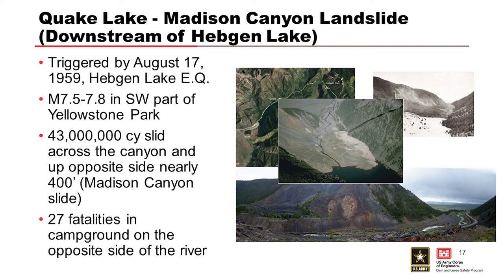This is Quake Lake and the Madison Canyon landslide. It was triggered by an earthquake — a magnitude 7.5 to 7.8 — causing mass wasting. You can see it on the right. It blocked part of the Yellowstone area. A 43-million cubic yard mass slid across the canyon and up the opposite side, and 27 fatalities occurred in the campground on the opposite side of the river.